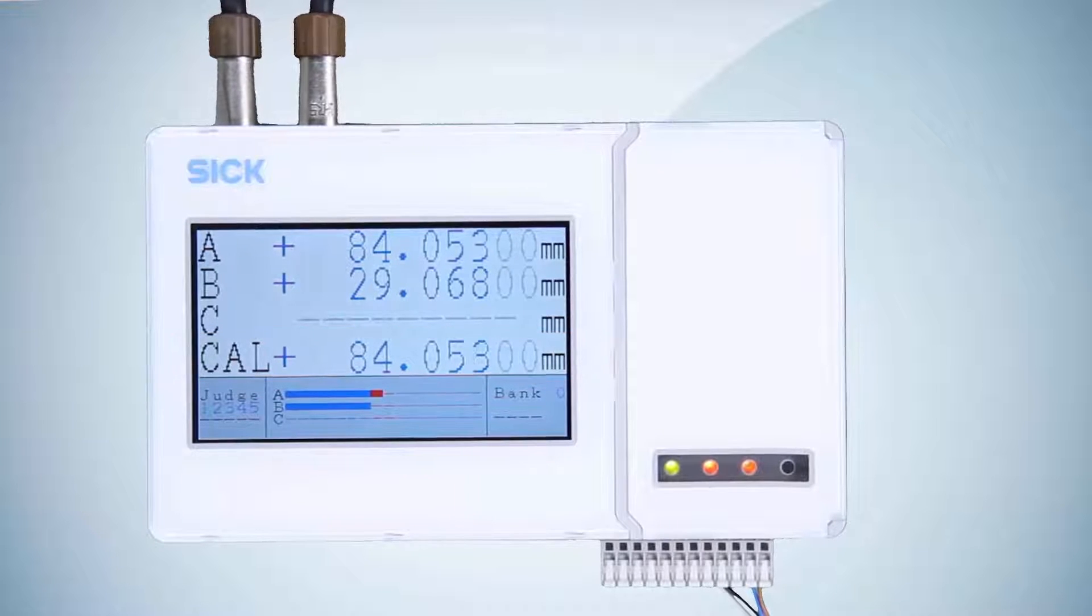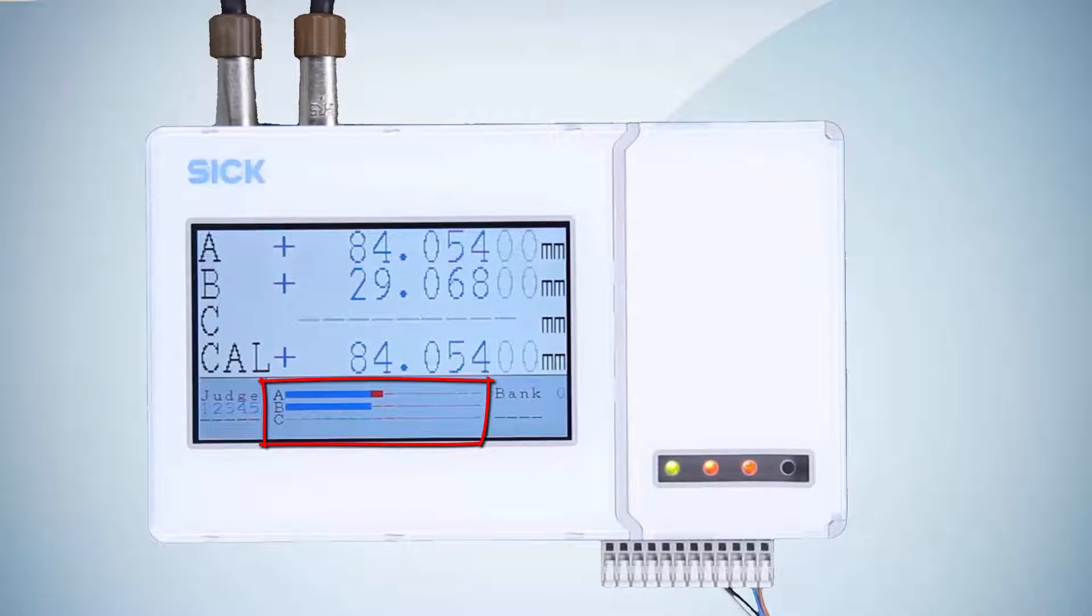At the bottom of the display on the AOD5 evaluation unit, you can see the positioning of each sensor in the measuring range. The red section marks the middle of the measuring range.